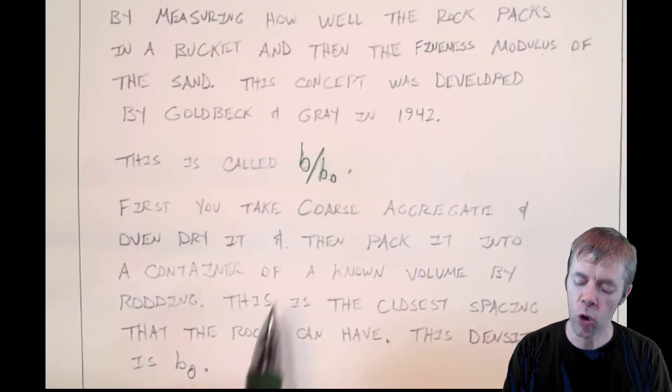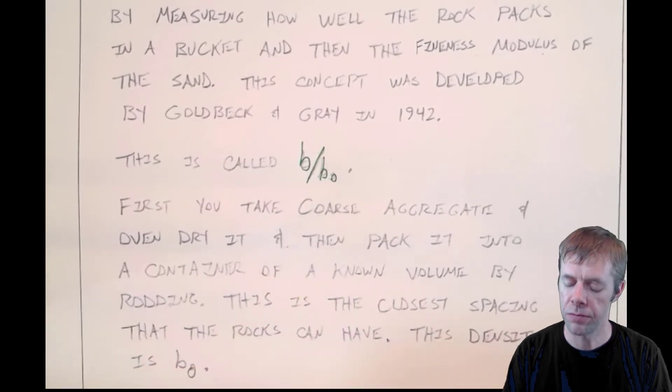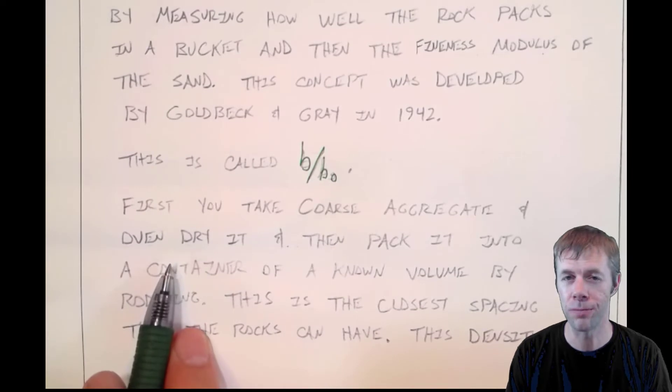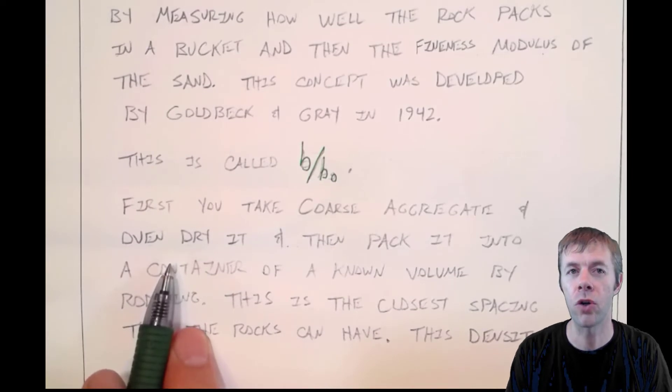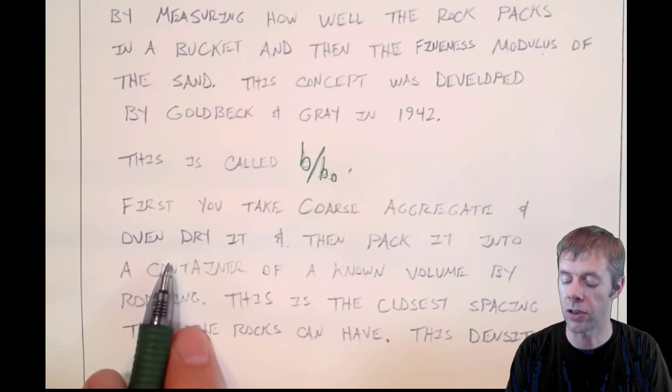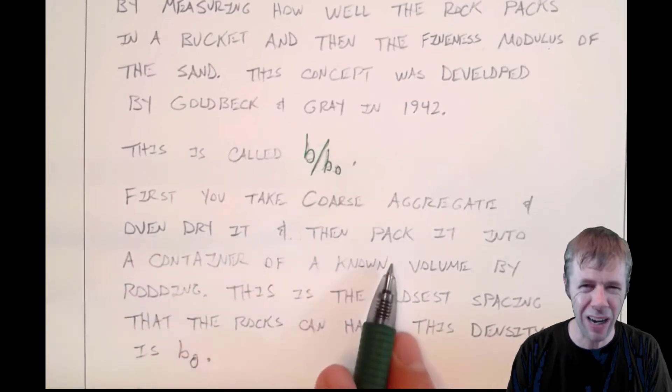First, Goldbeck and Gray took coarse aggregate and oven dried them. We're not going to use oven dry aggregate in the real procedure—ACI actually makes a correction factor for this, a modification from what Goldbeck and Gray did originally. But they used oven dry aggregate and then they packed them by putting them in a container and rodding them, beating on them.